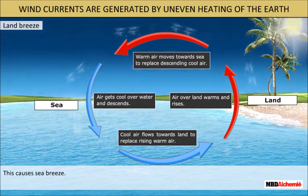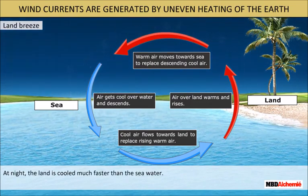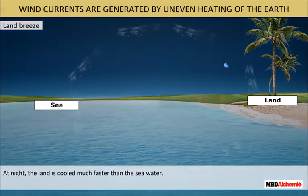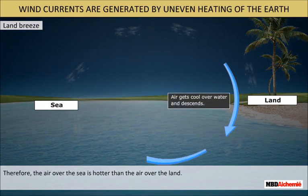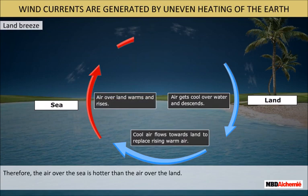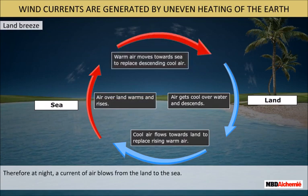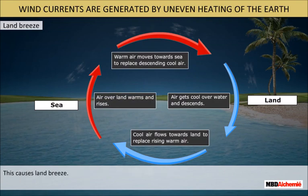Land breeze. At night, the land is cooled much faster than the sea water. Therefore, the air over the sea is hotter than the air over the land. Therefore, at night, a current of air blows from the land to the sea. This causes land breeze.